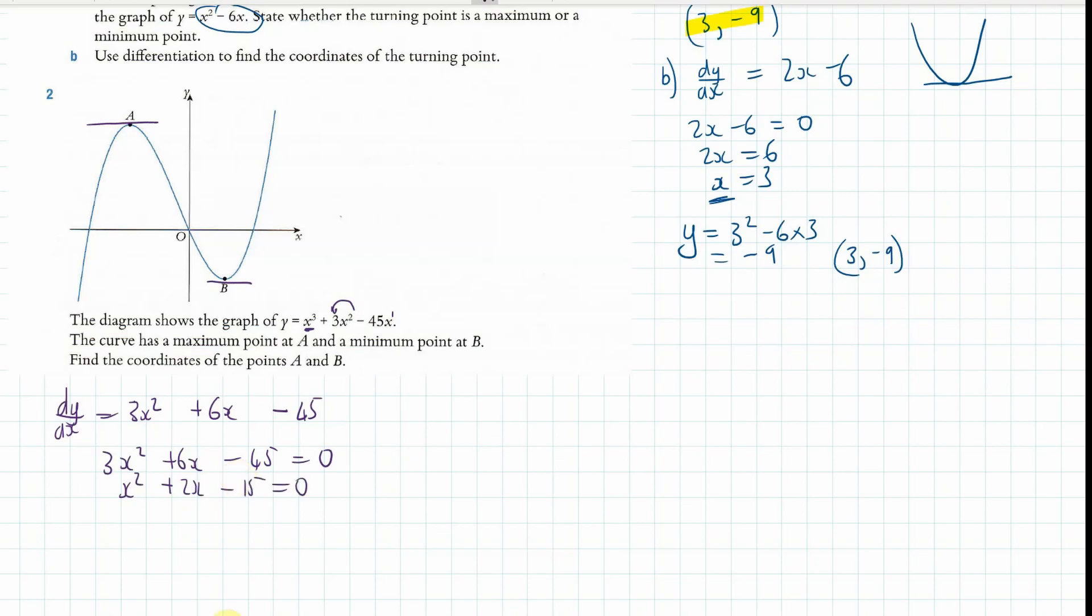Now, I hope you can see that we can divide everything by 3 there. Let's see. Numbers that multiply to make minus 15 that add to make positive 2. Looks like we can factorize this. I think it's going to be plus 5 and minus 3. So, the x coordinates equal 3 and minus 5.